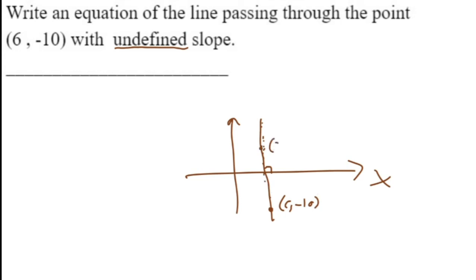Then, for every point on the line, x is equal to 6, y can be any value.